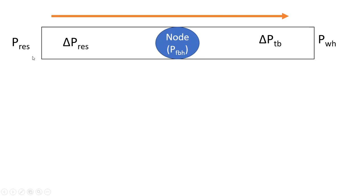If the reservoir pressure is 3,000 PSI and the wellbore pressure is 2,500 PSI, there is a pressure drop of 500 PSI in transit as the fluid moves from the reservoir to the wellbore. This tells us that the reservoir pressure is greater than the bottom hole pressure — otherwise there will be no flow in that direction. There is flow because there is a pressure gradient created in that direction. Our reservoir pressure is greater than our bottom hole flowing pressure, and the change in pressure is the difference between them.